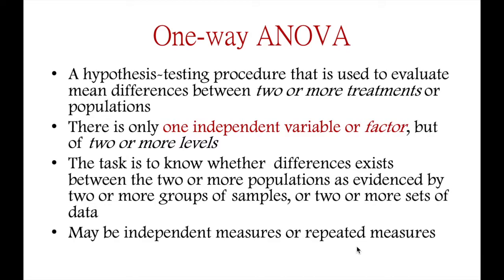One-way ANOVA can also be used with repeated measures, wherein the measures were collected from one sample repeatedly, or when the measures are collected from separate samples that have been matched in order to control for an extraneous variable.